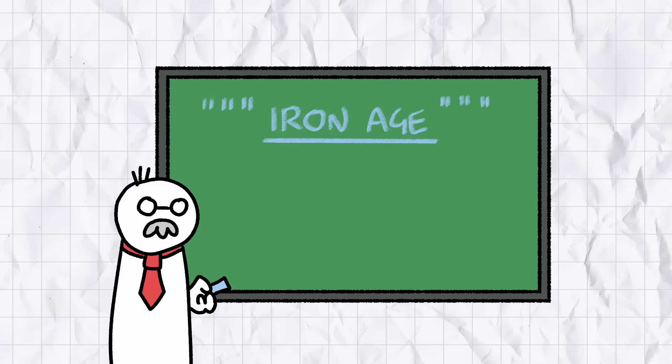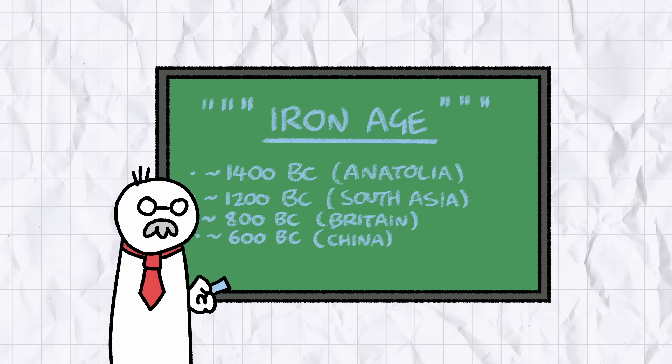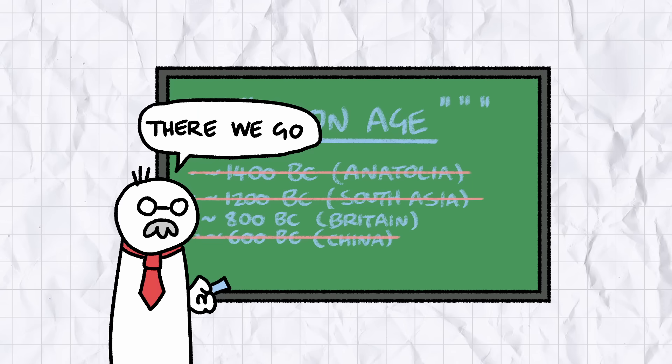Academically speaking, the term Iron Age is a bit hand-wavy. A slew of different civilisations discovered ironsmithing independently of one another. So depending on which parts of the world you consider to be based or cringe, the start of the Iron Age can vary by hundreds of years.